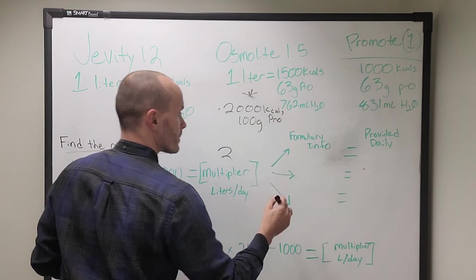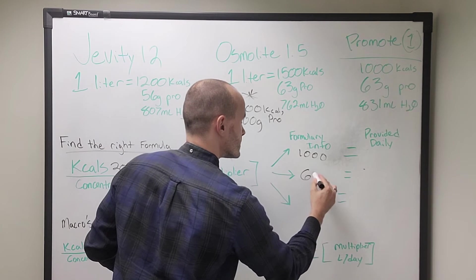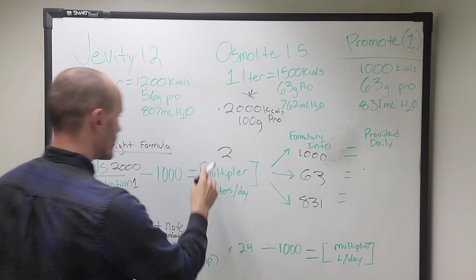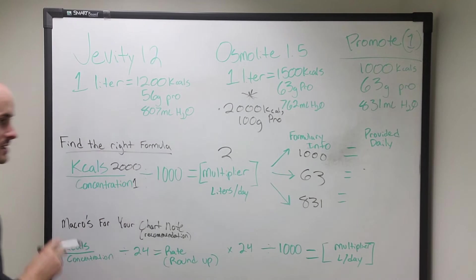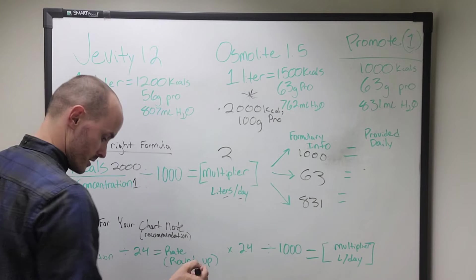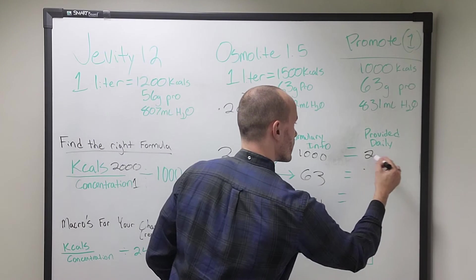So we take our numbers from our formulary, 1,063 and 831. So our patient, in order to get 2,000 calories, needs 2 liters per day. Each liter has this. So we multiply it out.